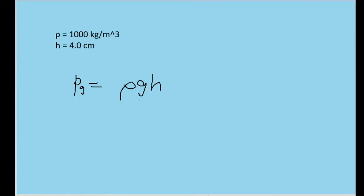This means the gauge pressure in our lungs will be negative. So we'll rewrite our formula as P sub G is equal to negative rho GH.